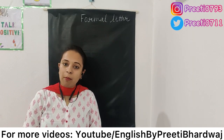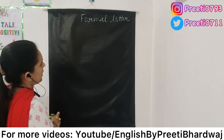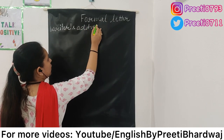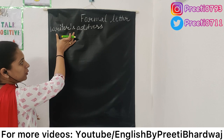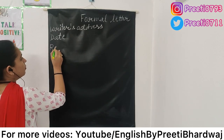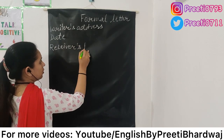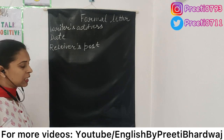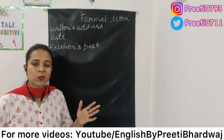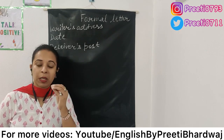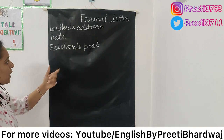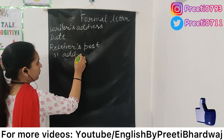Now let us talk about the format of formal letter writing. A formal letter begins with the writer's address. Then after writing the writer's address we leave a line and put the date. Again we leave a line after the date and then we write the receiver's post. Receiver's post means, for example, if you are writing a letter to the editor of any newspaper XYZ, the post of the receiver will be 'the editor'. So here will come the receiver's post and then the receiver's address.